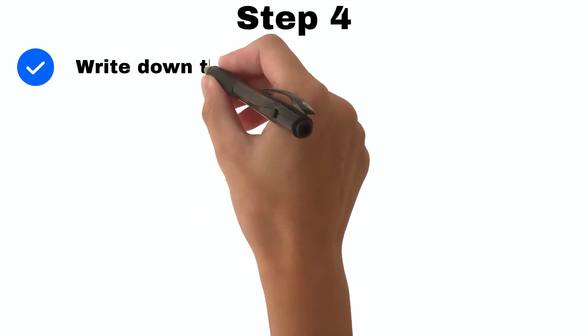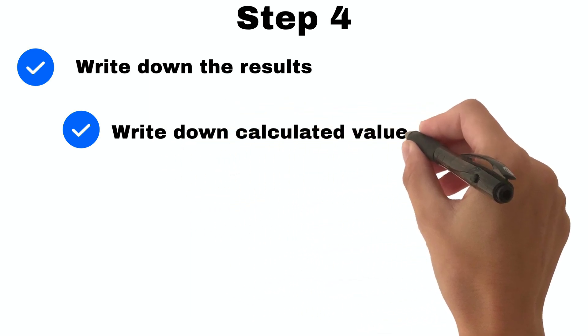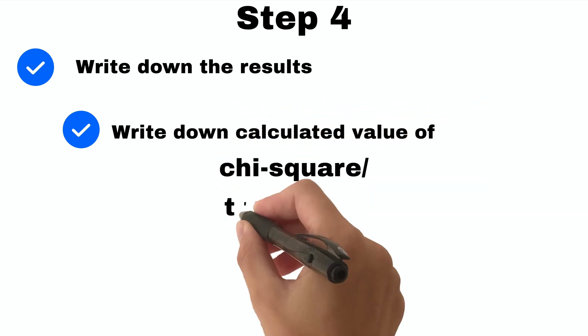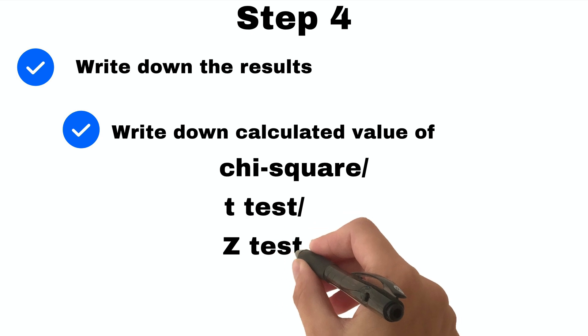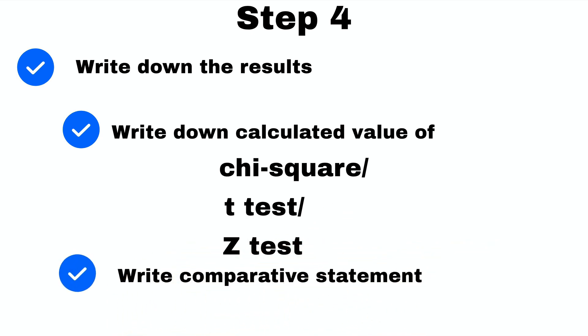Step 4: In step 4 we would be writing our results. Write down calculated value of chi-square, t test, z test, and also write a comparative statement whether your calculated value is higher or lower than the given table value.